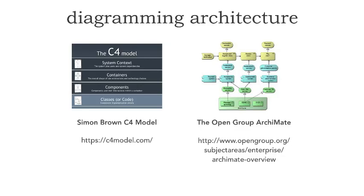The Open Group has been evolving a standard called Archimate, and you can get that through the link here or just Google Archimate. This is an XMI-based portable standard across diagramming tools, so if you are using Archi — A-R-C-H-I — which is the reference implementation and is open source for Archimate, you can draw diagrams there and then transfer them over to Biz Architect or any other commercial tool. I wouldn't say Simon Brown's model is a standard, but it is a good starting point for diagramming, whereas Archimate is really trying to enforce a standard.